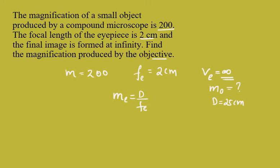They have mentioned the total magnification, and the total magnification for two lenses, the objective and eyepiece, will be Mo into Me. We need to find Mo. So Mo will be equal to M divided by Me, and Me is d by Fe.